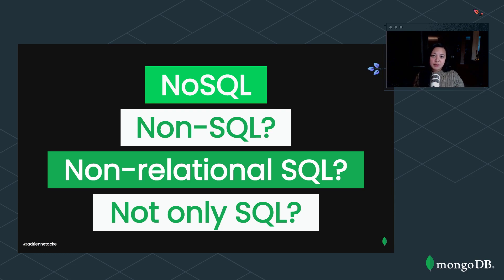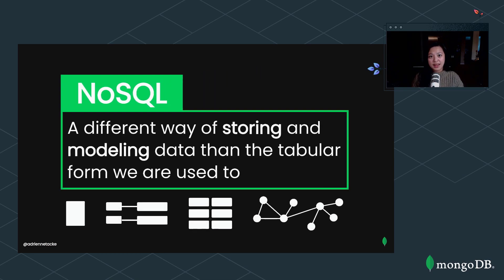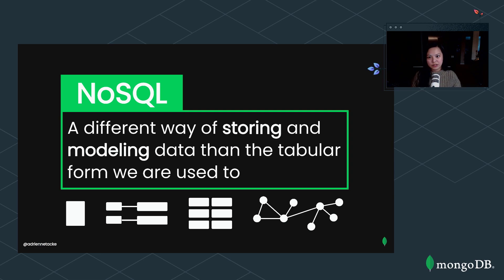If you're coming from a relational database background like I did, I think the clearest way to understand it is that NoSQL is really just a different way of storing and modeling data than the tabular form we're already used to. It's important to note that this kind of data model is not new — it's existed since the 1960s. The reason it didn't gain popularity until the late 2000s is because the cost of storage decreased dramatically, making the NoSQL data model much more pragmatic.